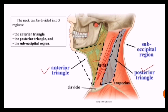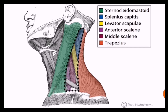Anterior to the sternocleidomastoid is what you call the anterior triangle, and the portion posterior to the sternocleidomastoid muscle is what you call the posterior triangle. This picture is showing you both the anterior triangle and the posterior triangle, with the sternocleidomastoid muscle dividing them.